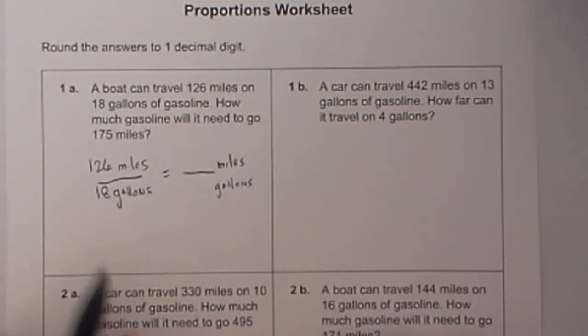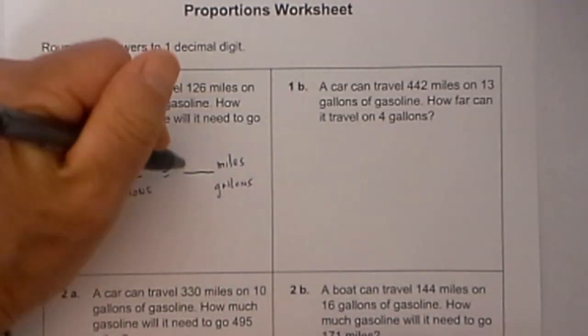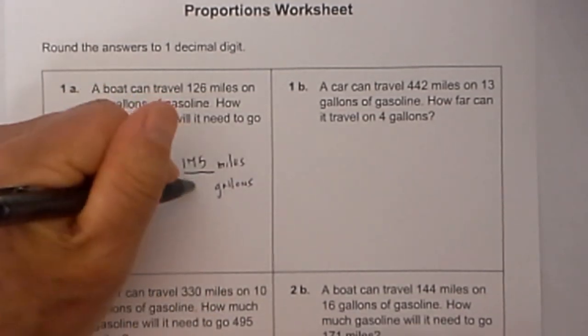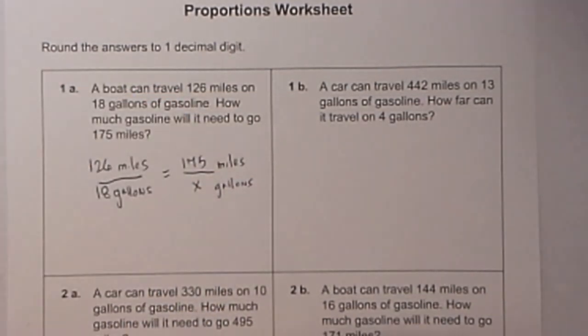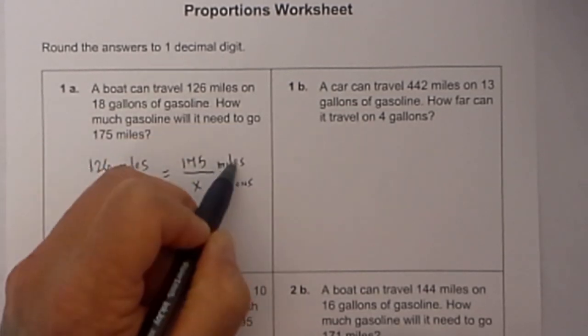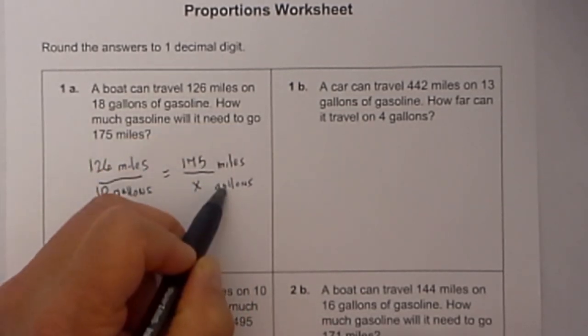Now let's take what other information is given. I know that if I go 175 miles, I need to know how many gallons that will take. I set it up properly with the numbers the same on the top and bottom.